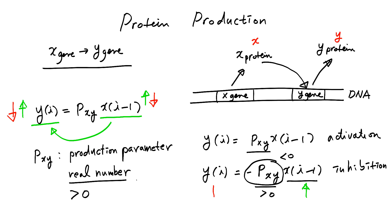As X increases, Y decreases. Now we've seen this model Y of I is P sub XY times X of I minus 1. And this is a linear time-invariant difference equation.